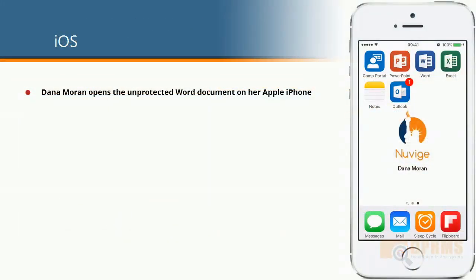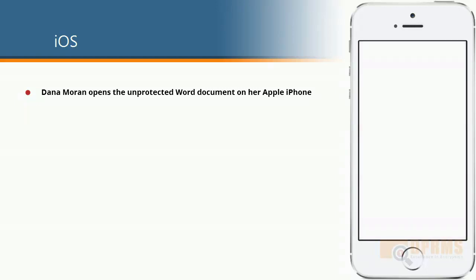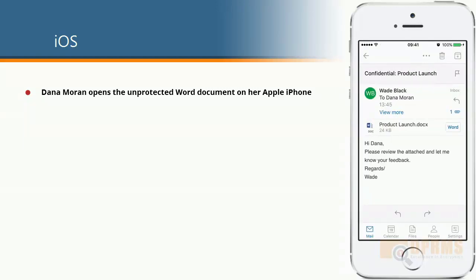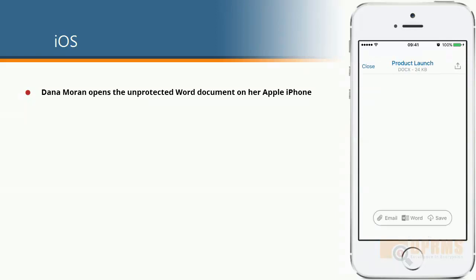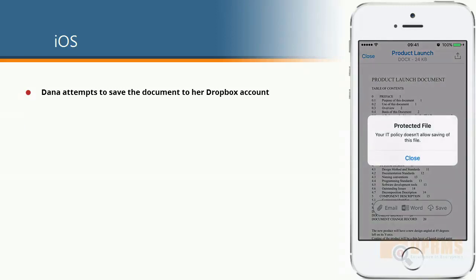Danamoran has received an email from Wade Black containing a product launch document. She opens the document on her iPhone and tries to save it to her Dropbox. As we can see, Microsoft Intune restricts her from doing this, as the application is not being managed by Intune.